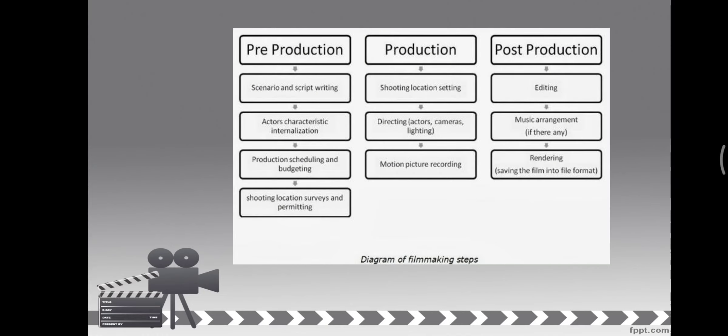To summarize: in pre-production, we have scenario and script writing, actors, characterization, internalization, scheduling, budgeting, location surveys, and permitting. In production, we have the actual shooting, directing, and motion picture recording. In post-production, we have editing, music arrangement, and rendering. The workload across all phases is roughly equal, and as mentioned, everyone must look at one goal: to make the film a successful one.